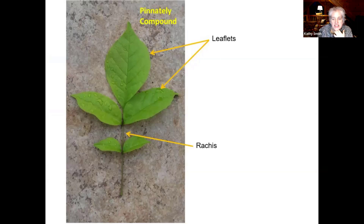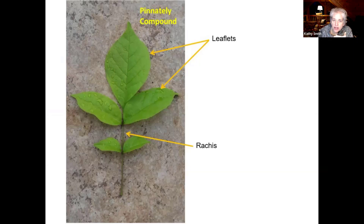A little more detail on a pinnately compound leaf. You have five leaflets on this one. The rachis is the center point where the leaflets are attached. Number of leaflets, what they look like attached to the rachis — all of that plays a role in being able to properly identify some of our hardwood trees.